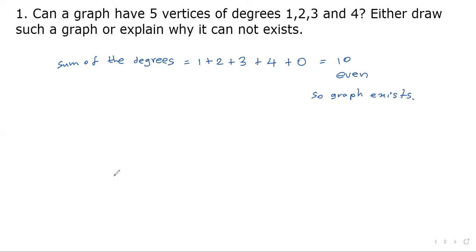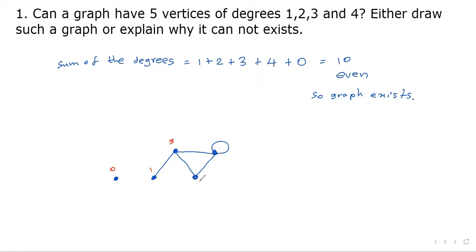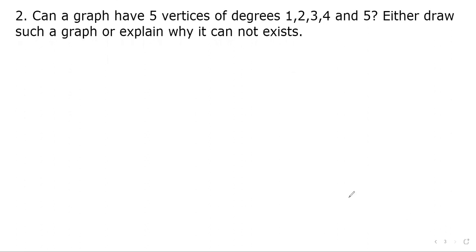Let's draw the graph with five vertices: one vertex with degree zero, one with degree one, one with degree two, one with degree three, and one with degree four.